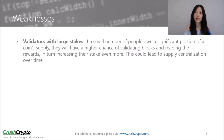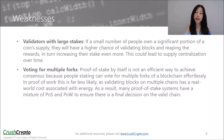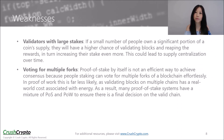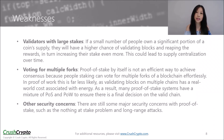In terms of weaknesses, with Proof of Stake, if a small number of people own a significant portion of a coin supply, they will have a higher chance of validating blocks and reaping all the rewards, which in turn increases their stake even more and could lead to supply centralization over time. Proof of Stake by itself is not an efficient way to achieve consensus, as people staking can vote for multiple forks of a blockchain effortlessly — in Proof of Work, this is less likely as validating blocks on multiple chains has a real-world energy cost. As a result, many Proof of Stake systems feature some combination of Proof of Stake and Proof of Work. There are still some major security concerns with Proof of Stake, and as it is still a relatively new concept, researchers are finding ways to mitigate or eliminate these threats, with breakthroughs potentially happening in the near future.